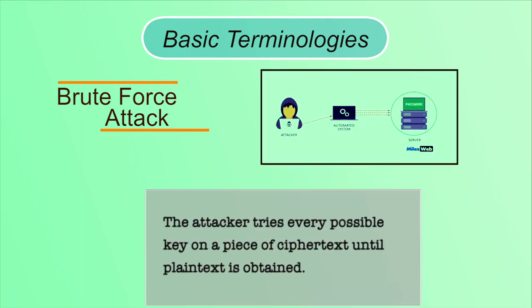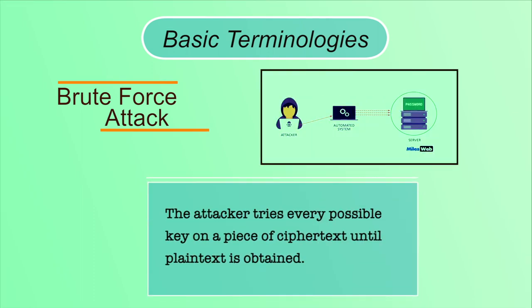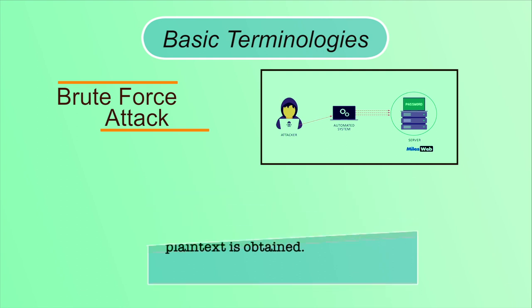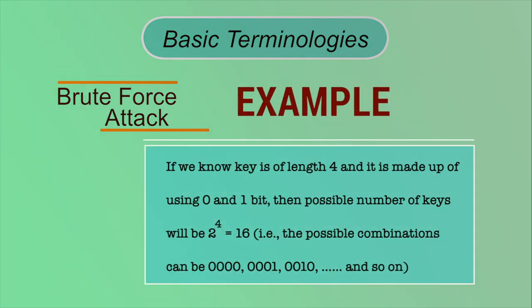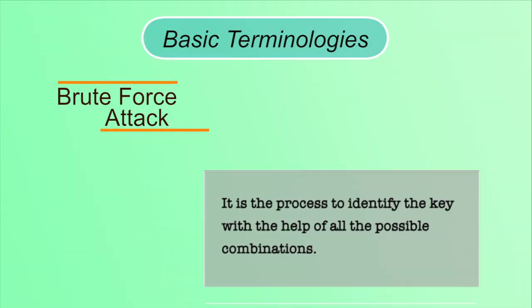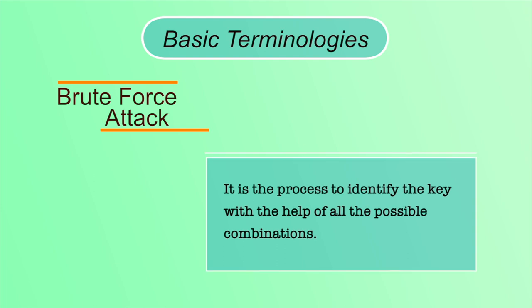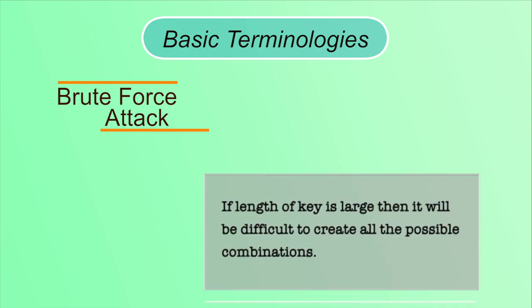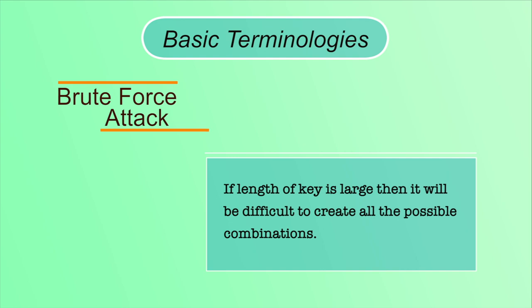Let us discuss what is brute force attack. In this attack, the attacker tries every possible key on a piece of ciphertext until plain text is obtained. For example, if we know a key is of length 4 and made up of bits 0 and 1, then the possible number of keys will be 2^4 = 16 — combinations like 0000, 0001, 0010, and so on. Brute force is the process of identifying the key using all possible combinations. If the length of the key is large, it is difficult to create all possible combinations.